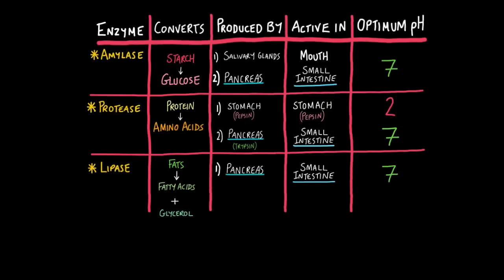Lipase converts fats into fatty acids and glycerol produced by the pancreas, active in the small intestine, and have an optimum pH of 7.